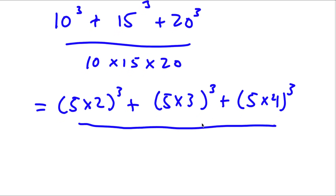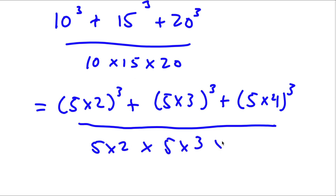All over: 10 is the same as 5 times 2, times 15 which is 5 times 3, times 20 which is 5 times 4.